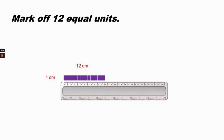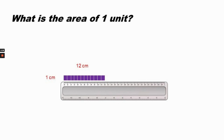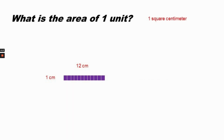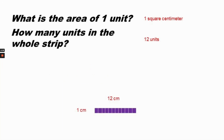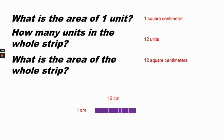I've marked off 12 equal units using one centimeter as a unit. So what is the area of one unit? The strip is one centimeter wide and one unit is one centimeter long, so each unit is one square centimeter. There are 12 units in the whole strip, and the area of the whole strip is 12 square centimeters.